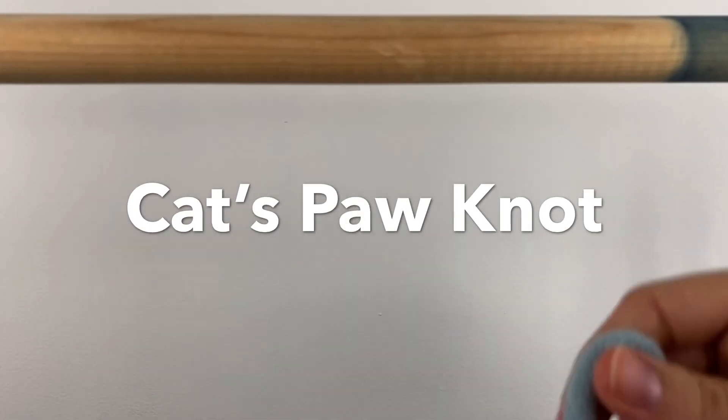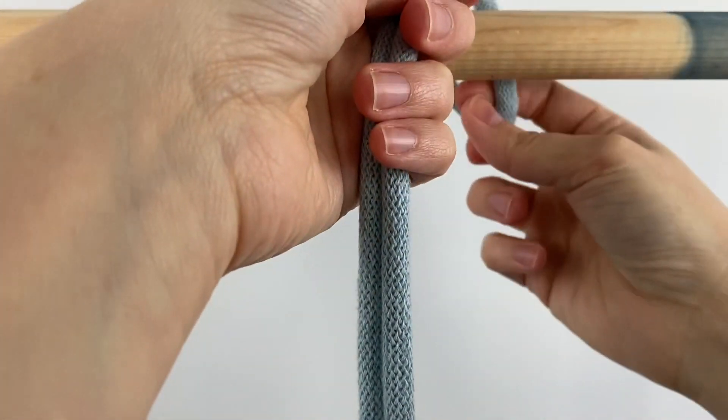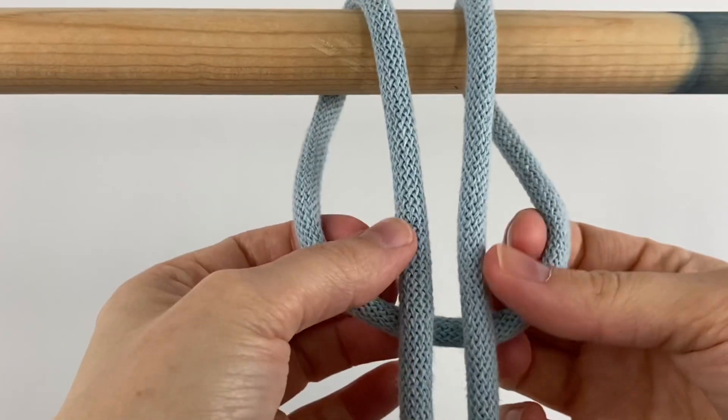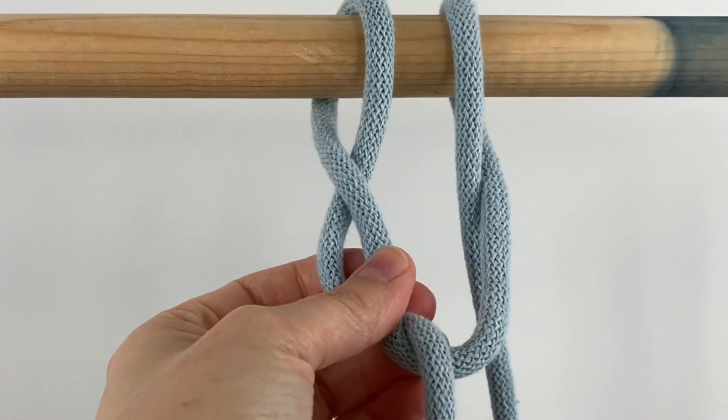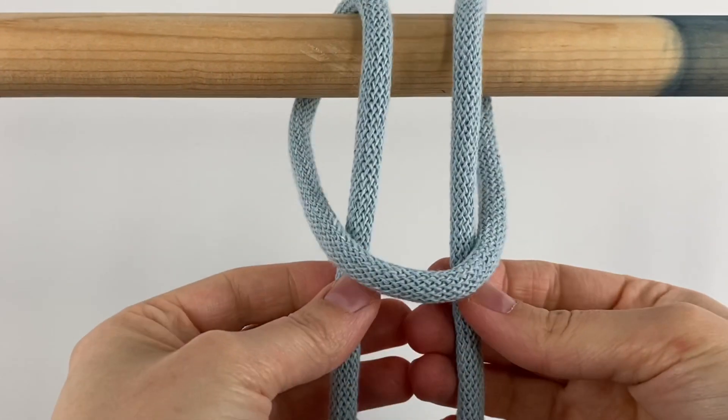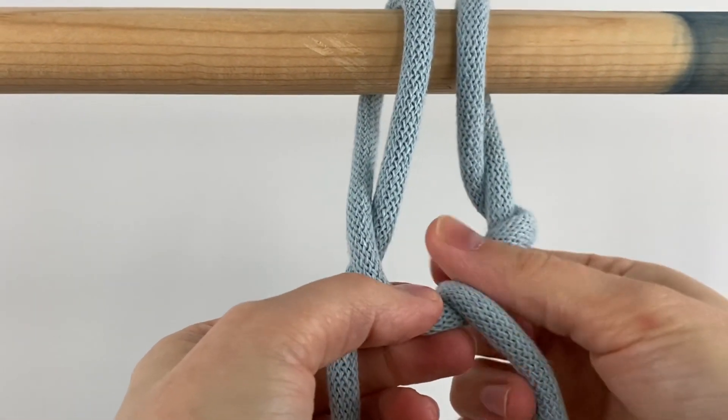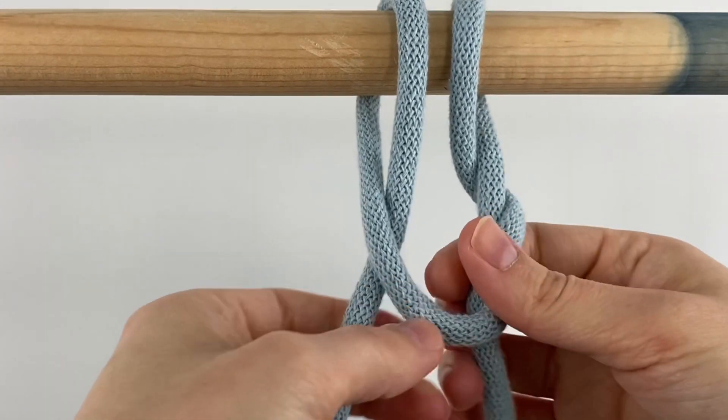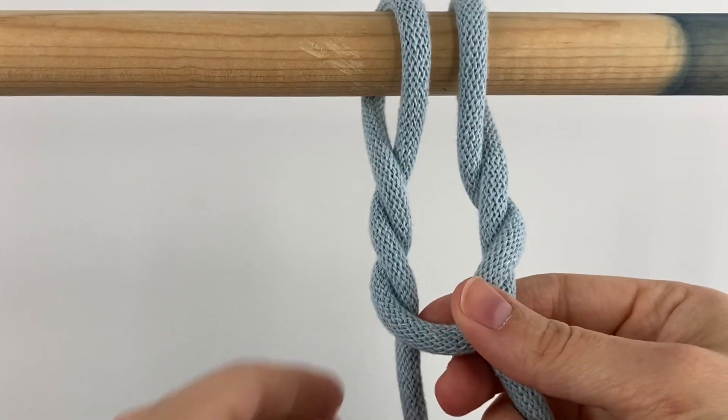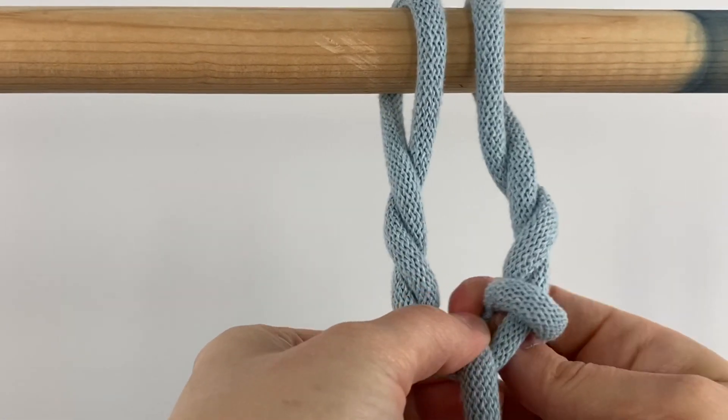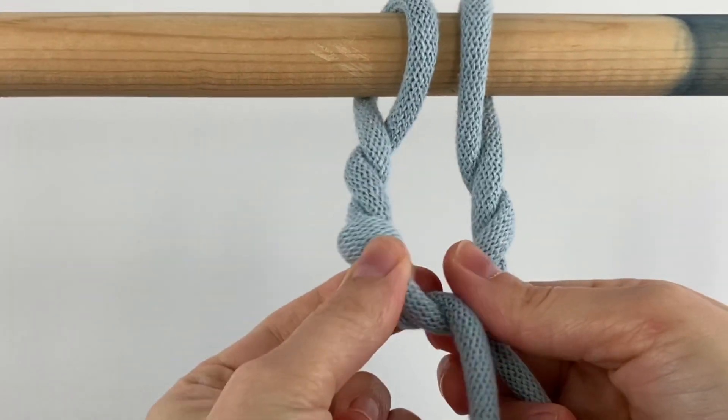Now I'm going to show you how to do the cat's paw knot. So fold your cord in half, flip it over the dowel. Now we're going to feed the cords through like you would normally for a larks head knot. So now we're here, but don't tighten it yet. Instead you're going to feed the cords through again, so that's two times on this side and two times on the left. And then we're going to do it one more time, so three times on the right and three times on the left.